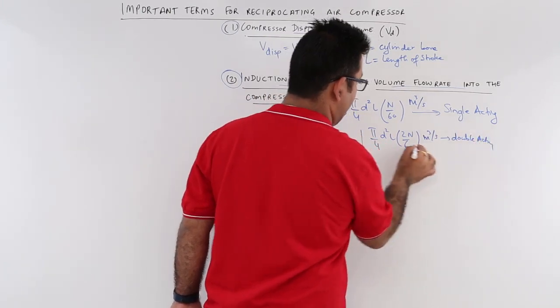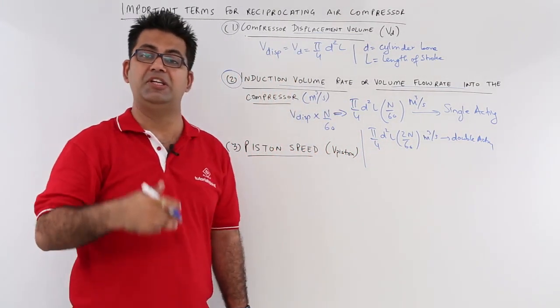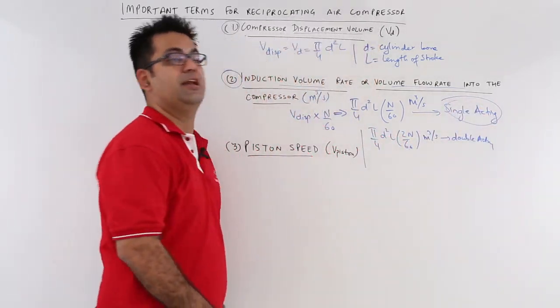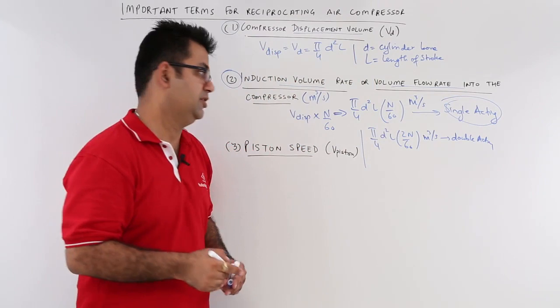Now why did we multiply by 2? Because you are handling twice the volume as compared to a single acting reciprocating air compressor, so you multiply that by 2. Remember this.